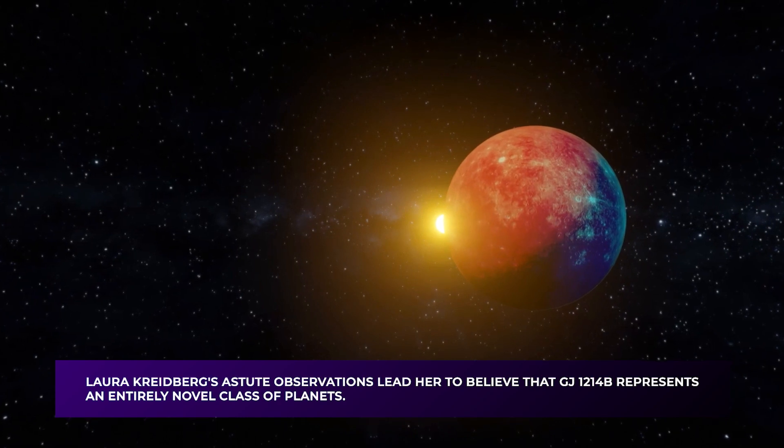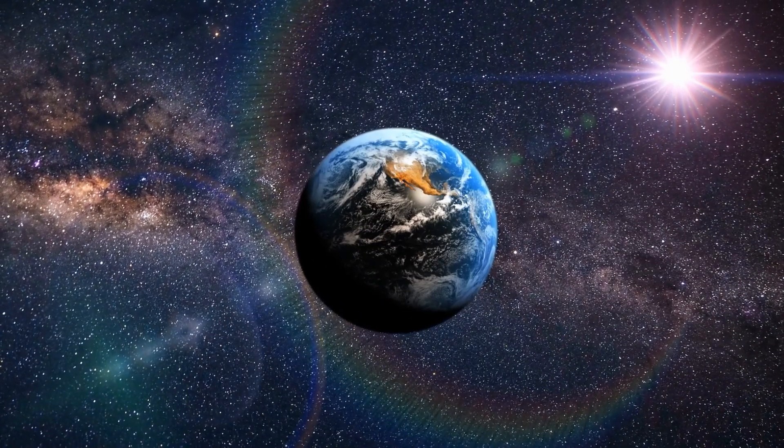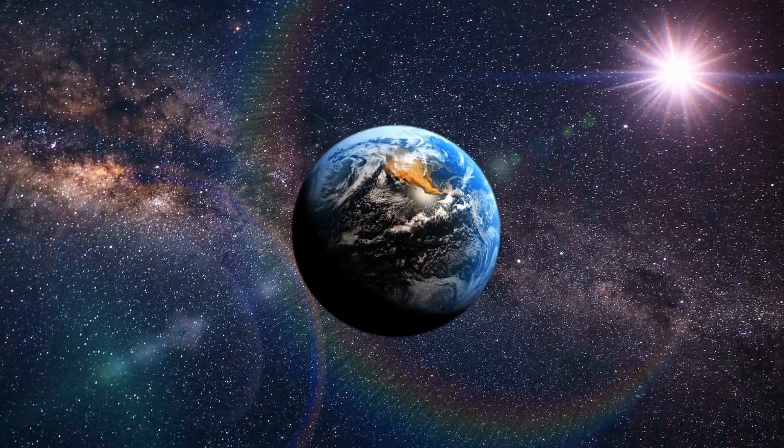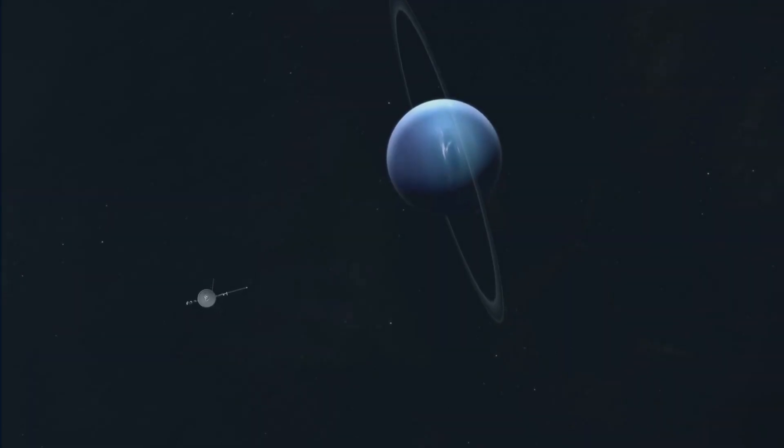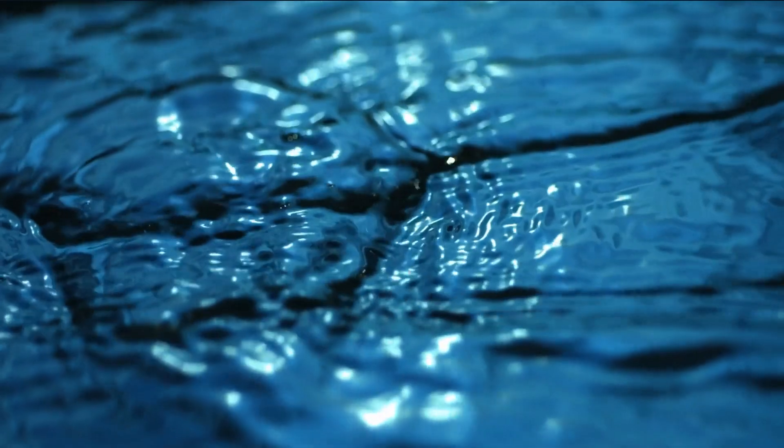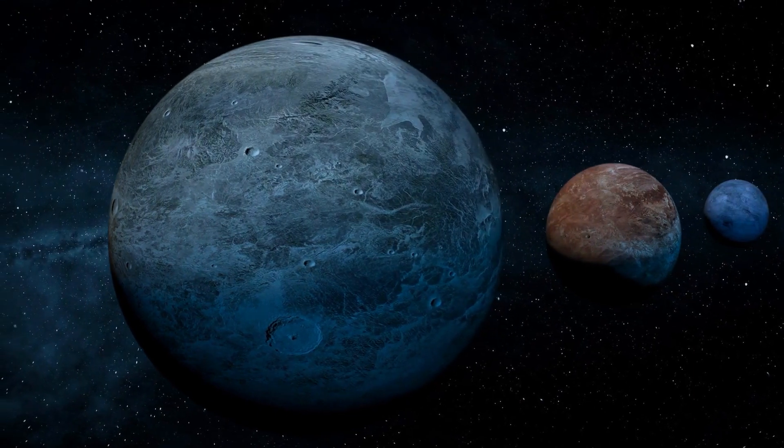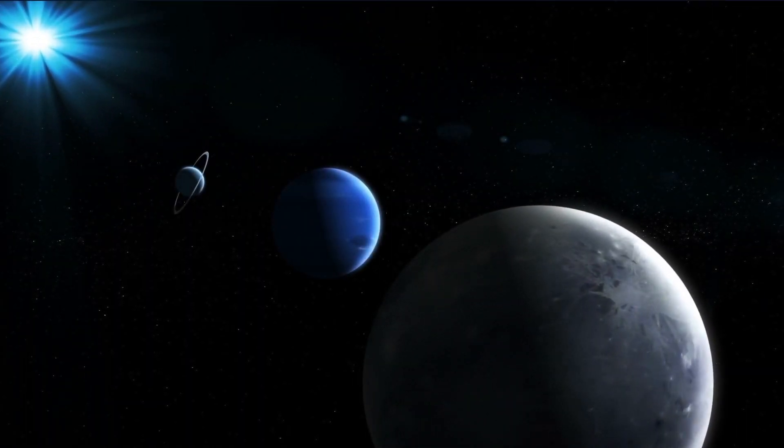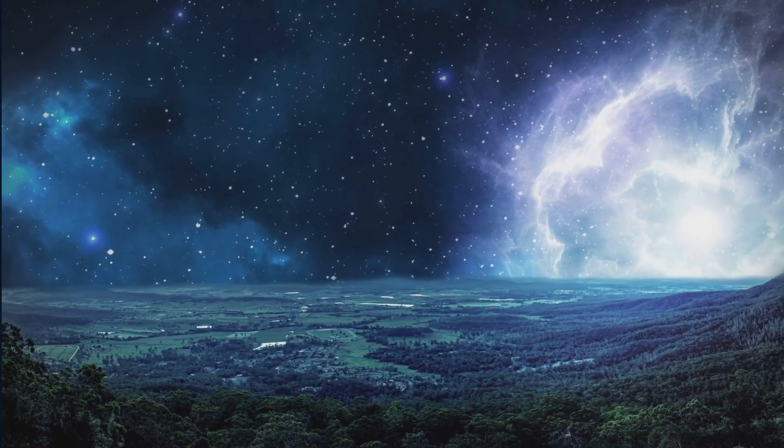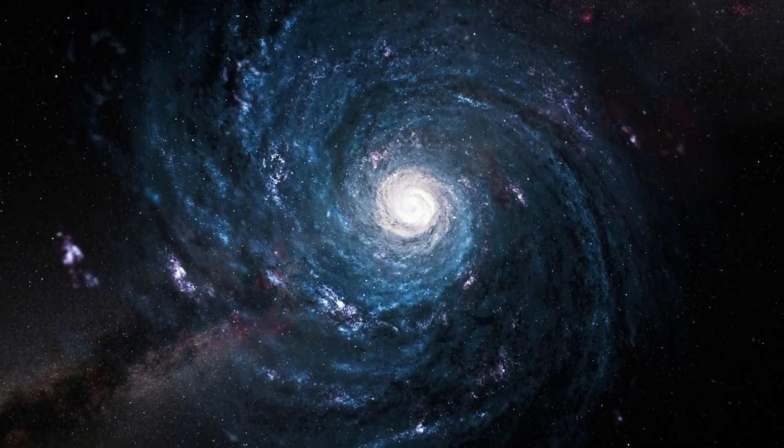Laura Kreideberg's astute observations lead her to believe that GJ-1214b represents an entirely novel class of planets. Drawing comparisons to Neptune and Earth, Kreideberg highlights the distinctiveness of GJ-1214b, asserting that it is a unique entity in its own right. While Neptune predominantly comprises a hydrogen atmosphere, the data suggests that GJ-1214b's atmosphere is predominantly composed of water, placing it in a category previously unexplored. This remarkable revelation propels GJ-1214b into an unprecedented category, solidifying its status as a planet that defies conventional classification. The discovery challenges our preconceived notions of planetary compositions and broadens our understanding of the diverse celestial bodies that populate our galaxy.